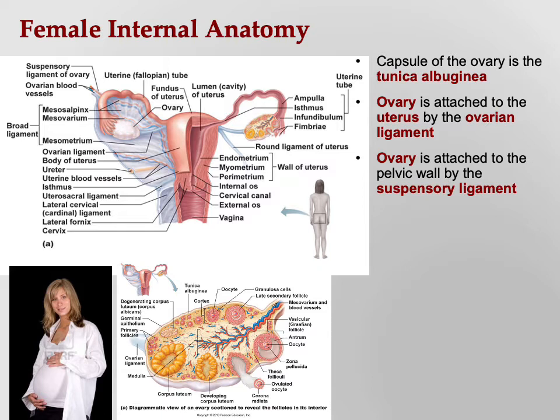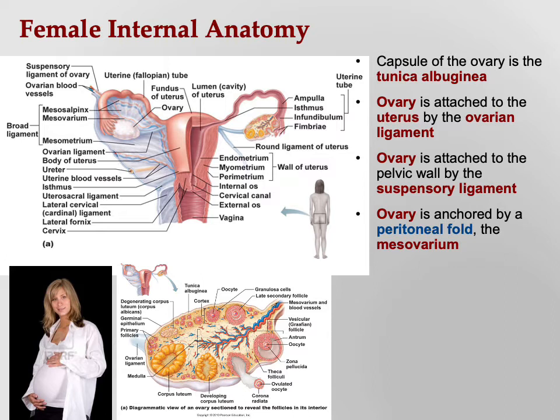The ovary is also attached to the pelvic wall by the suspensory ligament — like guy wires holding something in a certain position. The ovary is also anchored by a peritoneal fold called the mesovarium. You can see the mesovarium there; once again it's just holding the ovary in position.